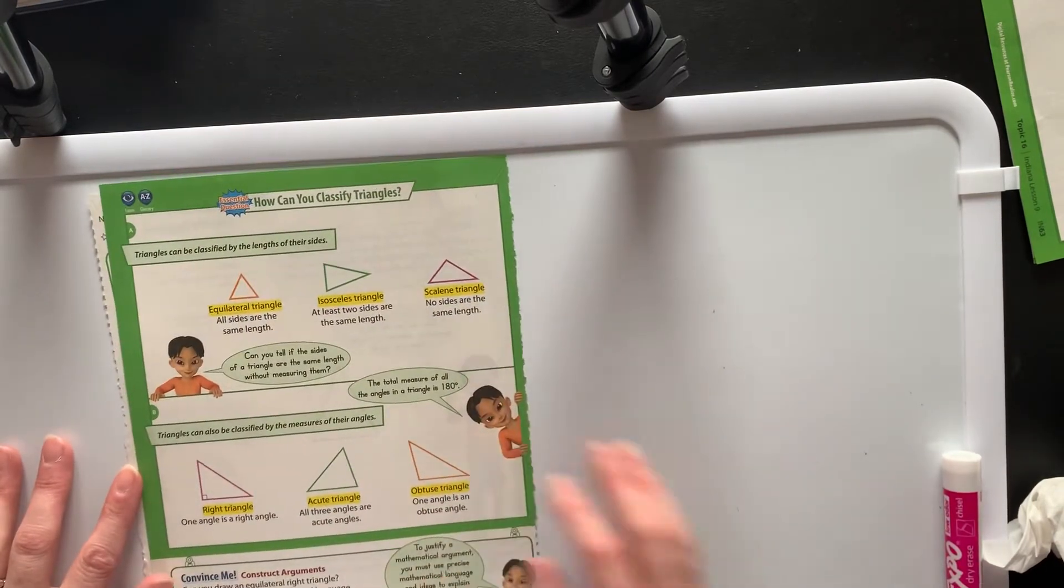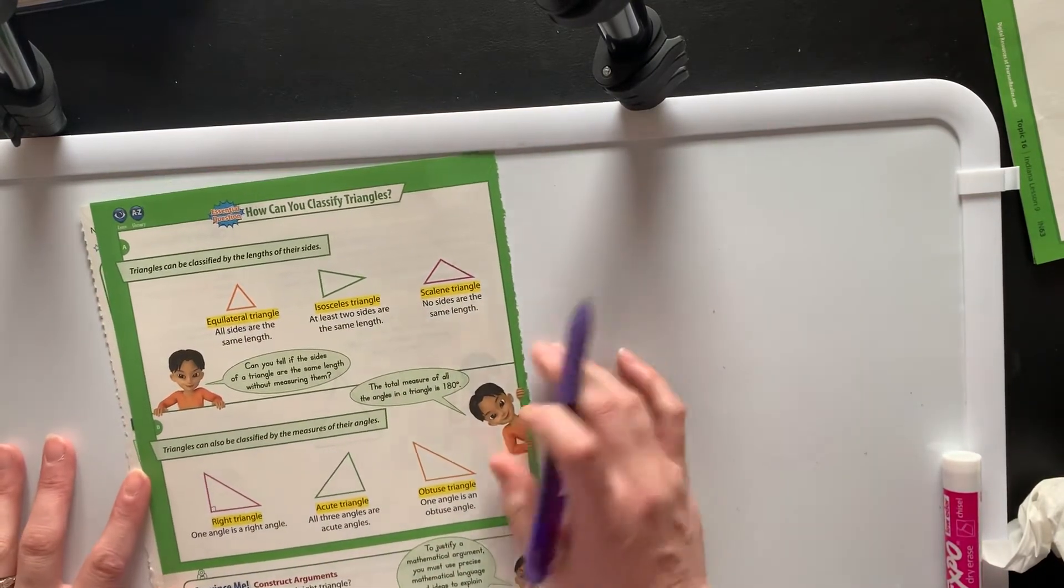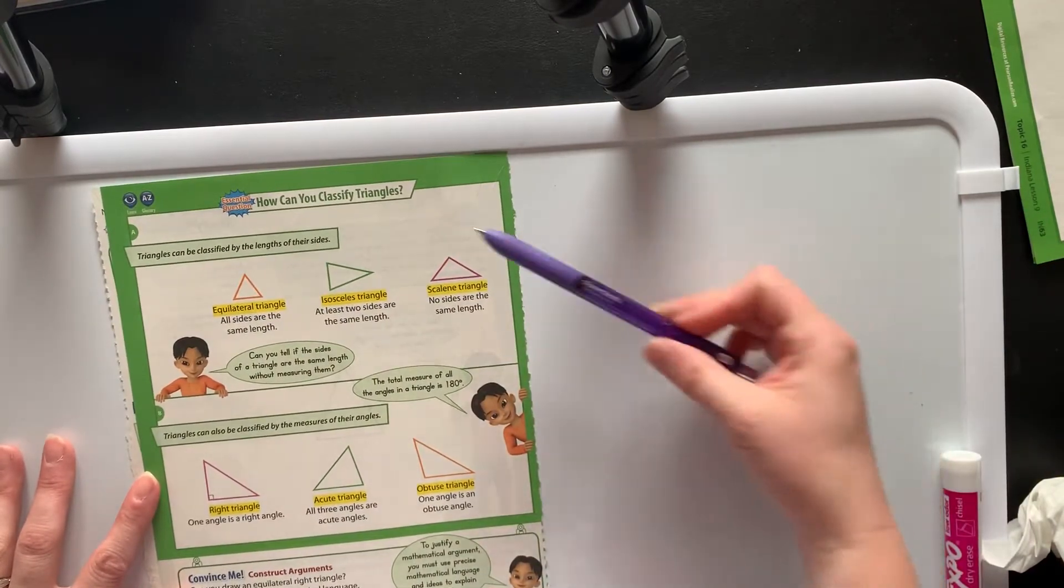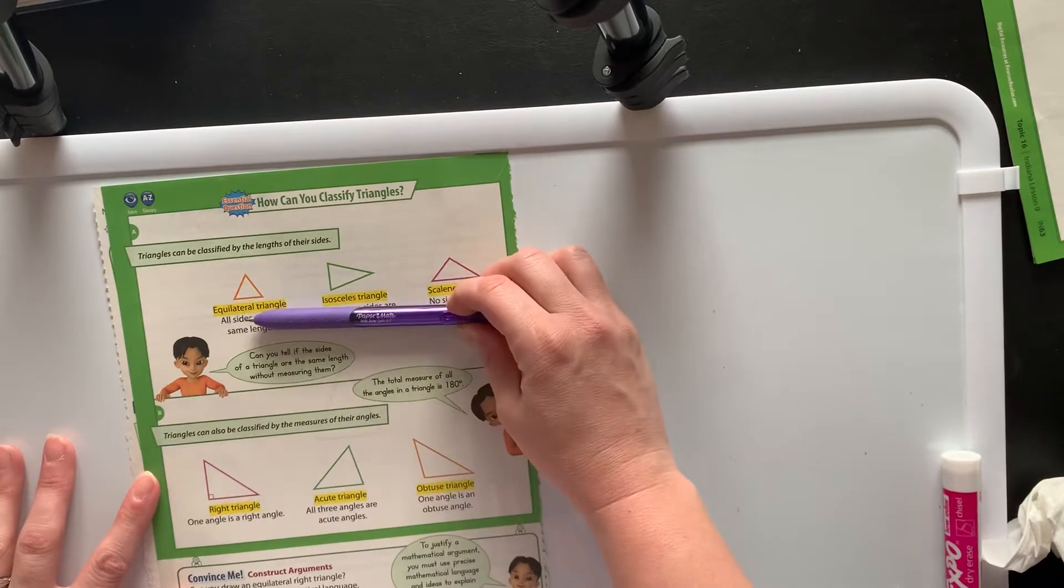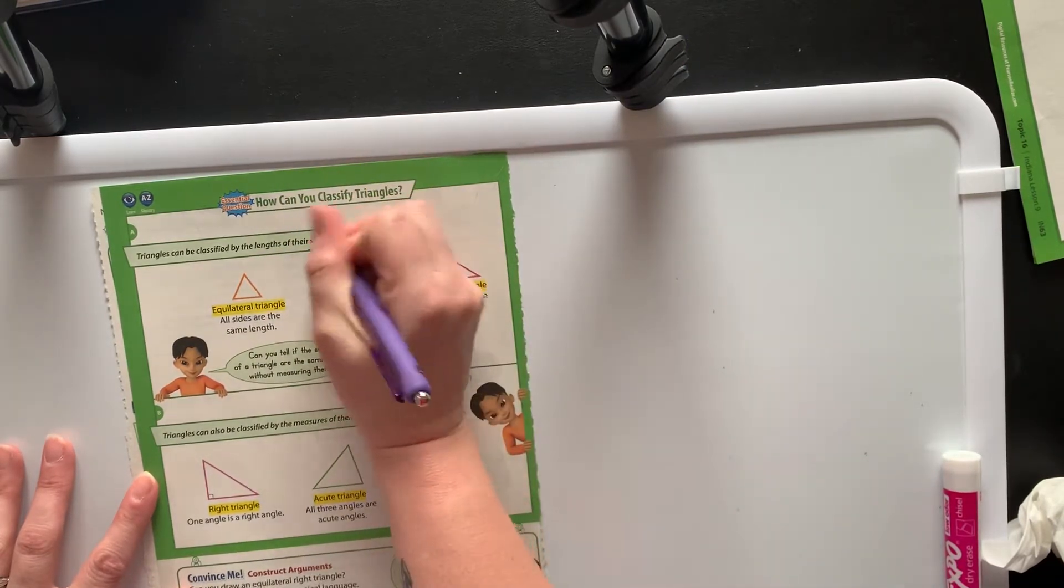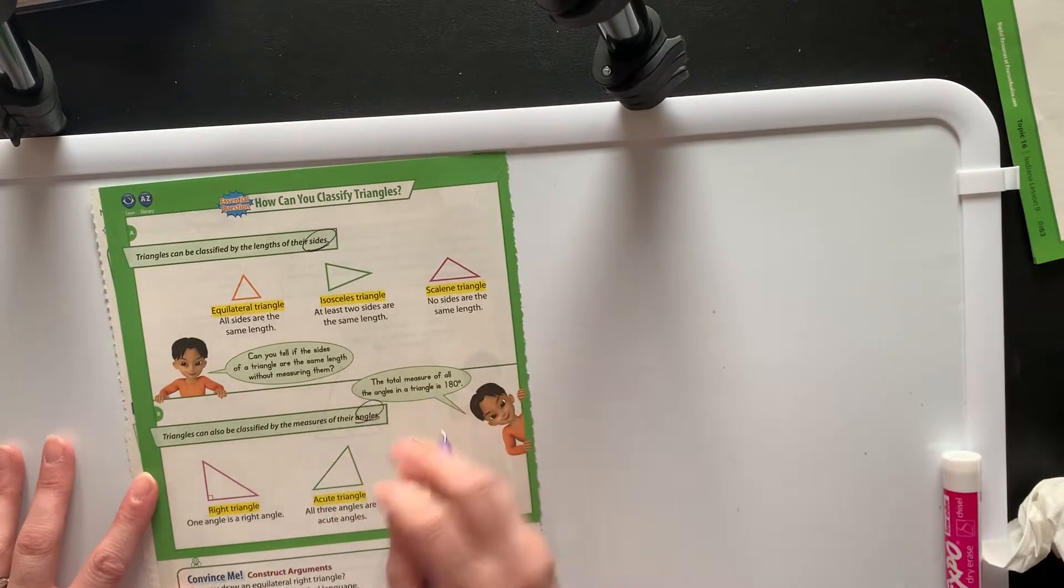If you hear some barking, that's because there's a puppy in here, so just ignore that. When you classify triangles, it's two different things. You can either talk about the lengths of the sides, or you can talk about the measure of the angles.